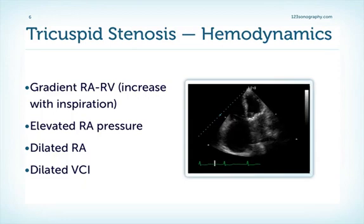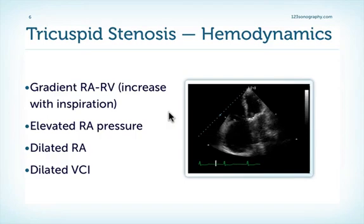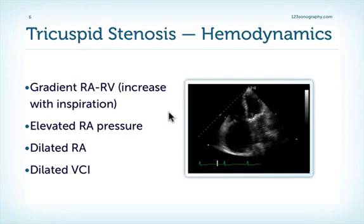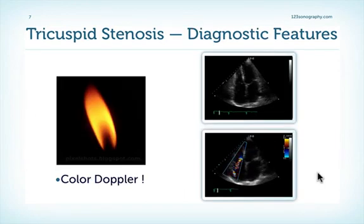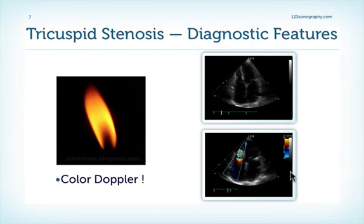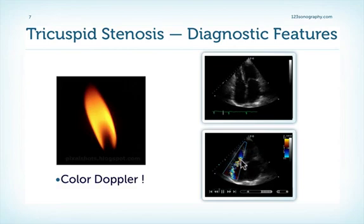Coming back to the gradients — one important thing: we have gradients which vary with respiration. This is in contrast to the mitral valve where the gradients stay fairly constant throughout the respiratory cycle. In tricuspid stenosis, the gradients increase during inspiration because we have an increase in flow. Always consider this when you quantify the severity of tricuspid stenosis. A very important diagnostic feature with color Doppler is the so-called candle flame sign, where you can see turbulent inflow into the right ventricle resembling a candle flame.